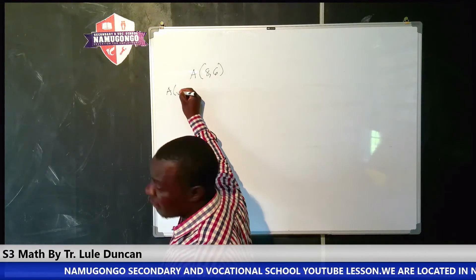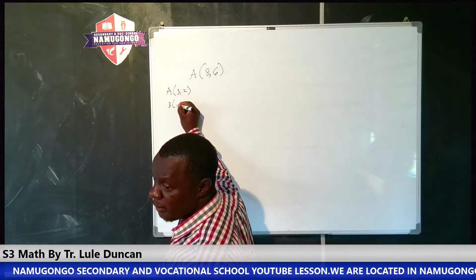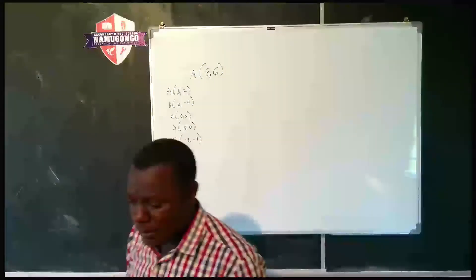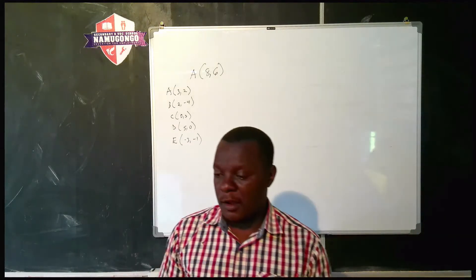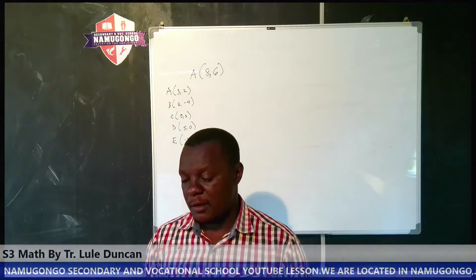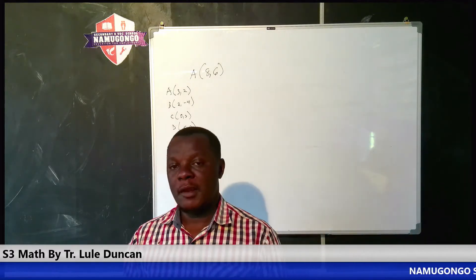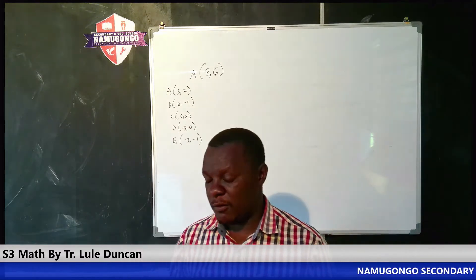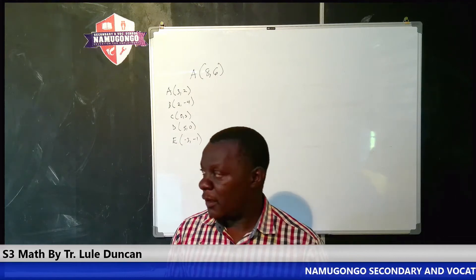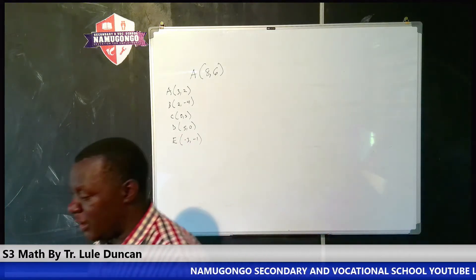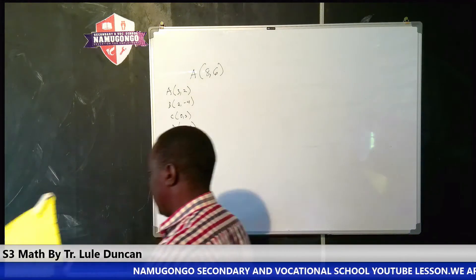We are going to locate the following points: point A which is (3, 2), point B which is (2, -4), point C which is (0, 3), point D which is (5, 0), and point E which is (-3, -1). The task is to use a Cartesian plane to plot those points. If you are handling this work, you must use graph paper — if you're in an exam, ask the teacher for graph paper.